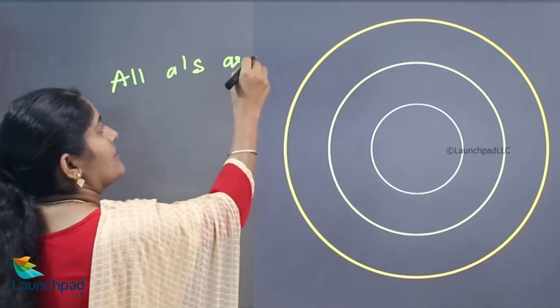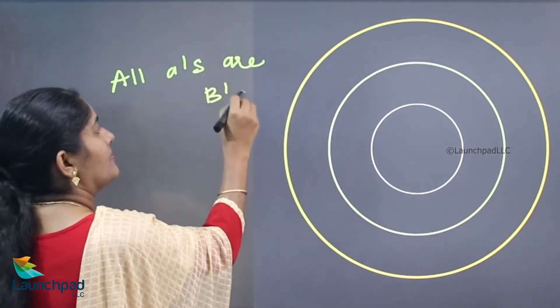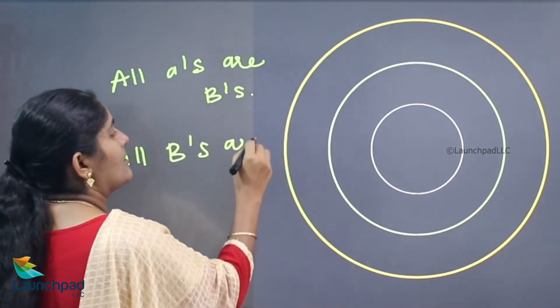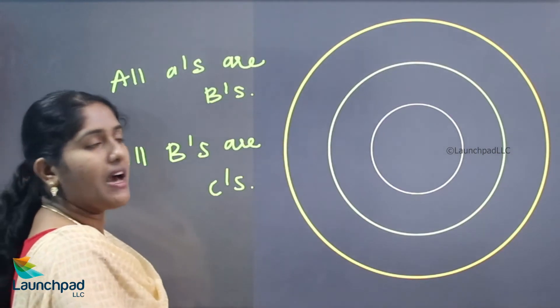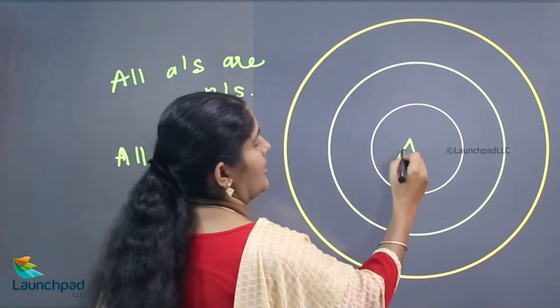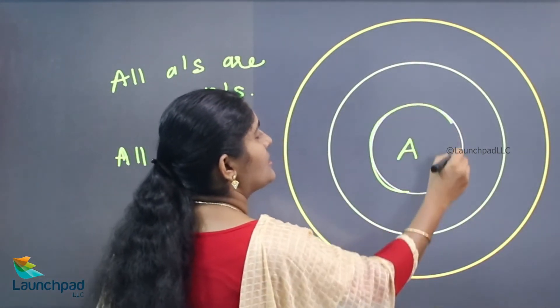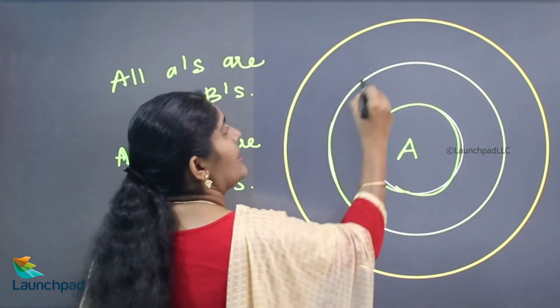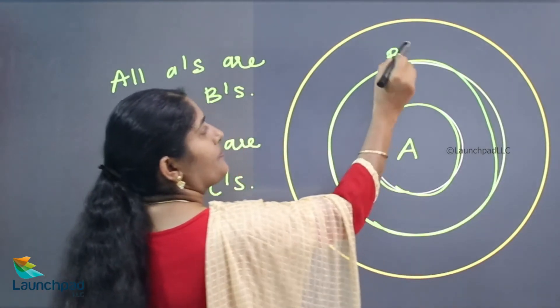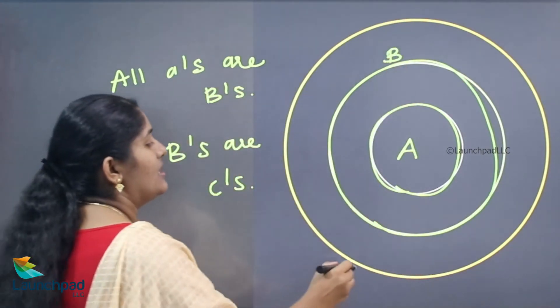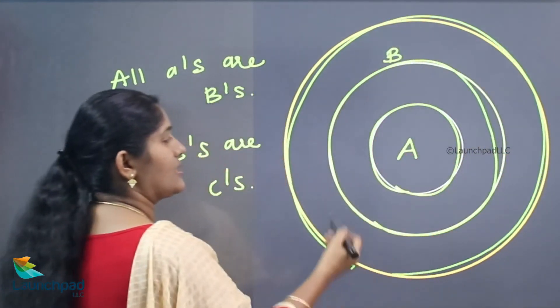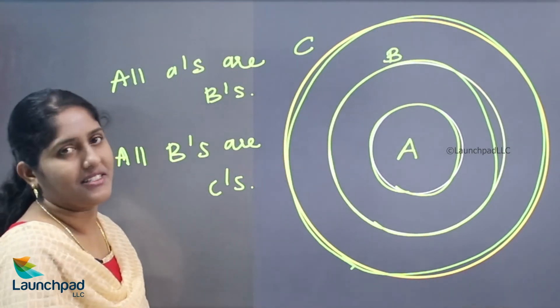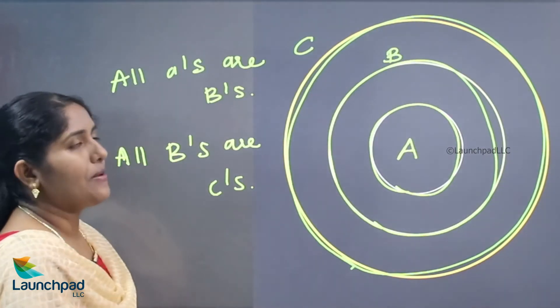Let's see one by one. Now, all A's are B's, second statement all B's are C's. Imagine this circle is denoted by A, after that all A is B, and all B is C. So this is the diagram for all statement.